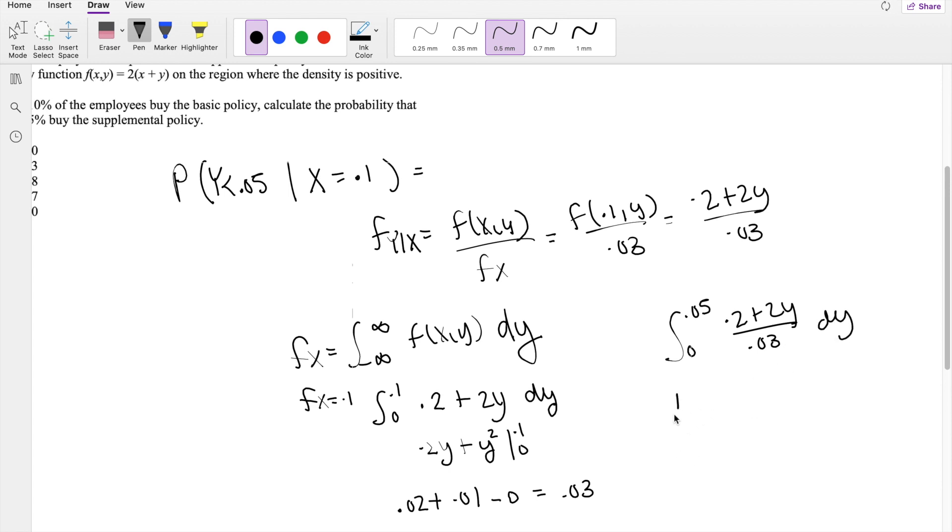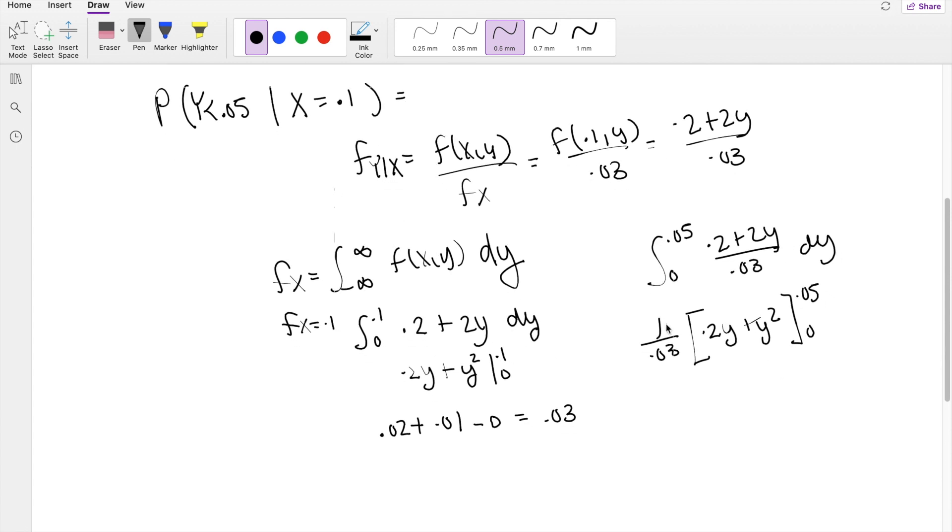Okay, so I'm actually going to throw that 1 over 0.03 outside. When I take the anti-derivative of 0.2 in respect to Y, it just becomes 0.2Y. Same thing here, when I take it in respect to Y, you get Y squared, integrating from 0 to 0.05. The lower limit just gives you 0, so we're worried about the upper limit here. The upper limit, 0.2 times 0.05 is equal to 0.01 plus 0.05 squared is equal to 0.0025.